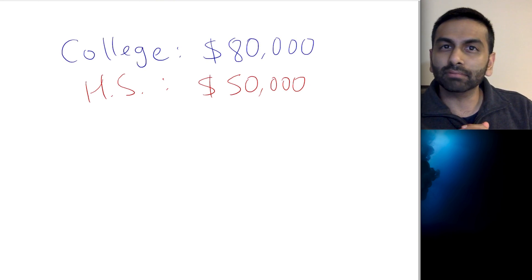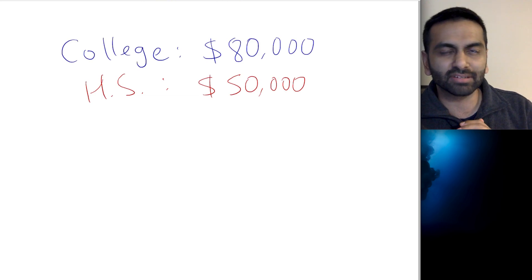Let's say that you know that the average college graduate makes $80,000 a year and that the average high school graduate makes $50,000 a year.